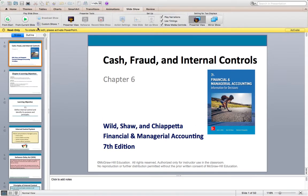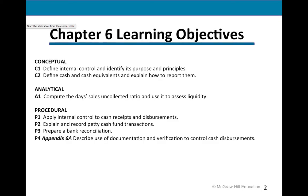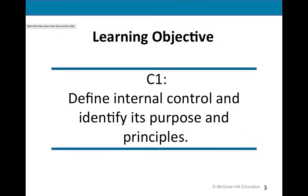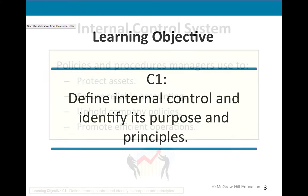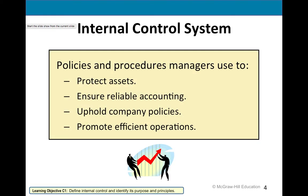Today we'll talk about Chapter 6, Cash Fraud and Internal Controls. The first thing we're going to talk about is what's internal control — its purposes and principles. The whole point of internal control is it's all the company's policies and procedures they have in place. Why do they have all these policies and procedures? To protect the company and their assets, make sure the accounting is reliable so they can make decisions based on it, make sure people follow policies, and that operations are done efficiently and effectively.